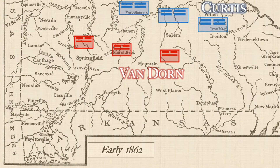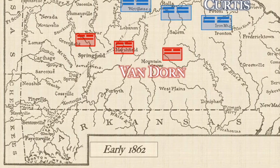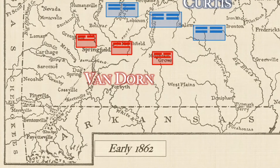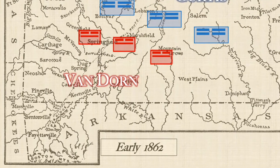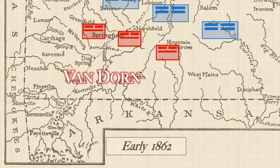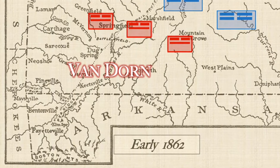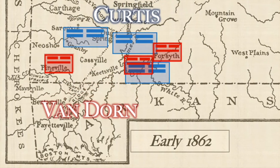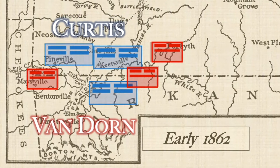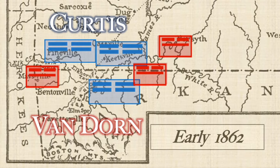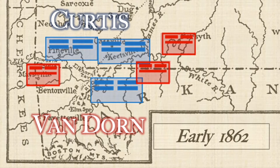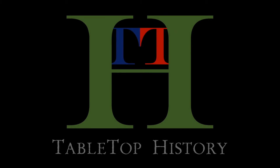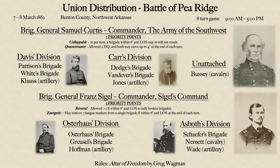In early 1862, while the armies back east were still in their development phase, armies were moving in the west. While Missouri had never officially seceded from the Union, there was no doubt a large secessionist and pro-slavery movement in the area. The Union spent much of late 1861 pushing Confederate troops south and west through Missouri, and the retreating Confederate troops fell back into Arkansas. Today on Tabletop History, we will refight the Battle of Pea Ridge from the 7th and 8th of March, 1862.